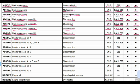Code AD1KA: the part is injector solenoid number 1 and the problem is disconnection. Related to the engine controller. Action code E02. Lamp blinks and buzzer gives beep. Code ADAZKB: the part is injector solenoid numbers 1, 2 and 3 and the problem is short circuit. Related to the engine controller.